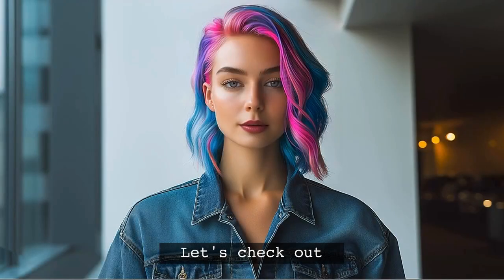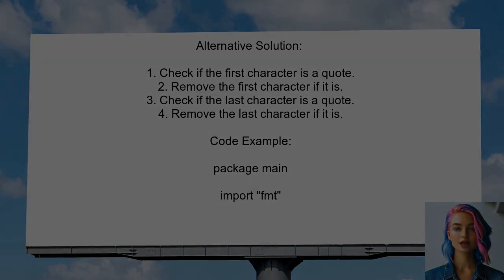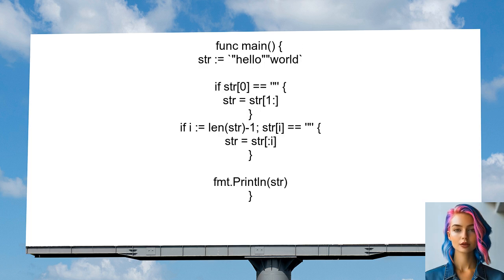Here's another perspective from a different user. This user suggests using slices to remove the quotes from the beginning and end of the string. They check if the first character is a quote and remove it, then check if the last character is a quote and remove that as well. This method modifies the slice without copying the string, making it efficient.